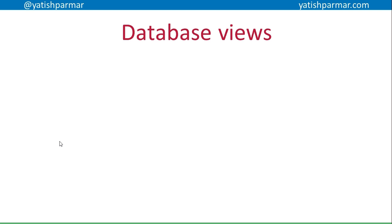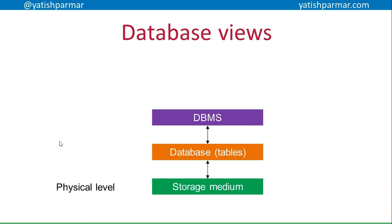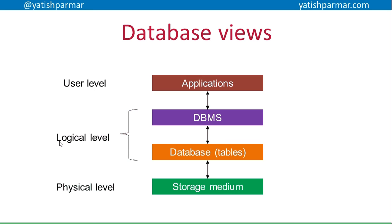Database views refer to the way we can divide a database up in order to increase the power and flexibility with which we can use it. On the most basic level we have the storage medium — that's the physical level. Above that we have the actual database tables stored on the storage medium, and the DBMS which is a layer of application controlling access, creating tables, queries, reports, etc. — this is the logical level. Then finally at the top you have the applications, which is the user level.